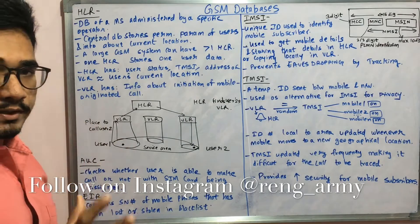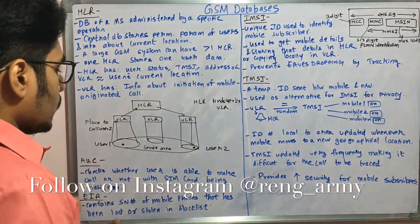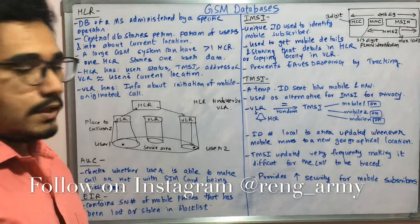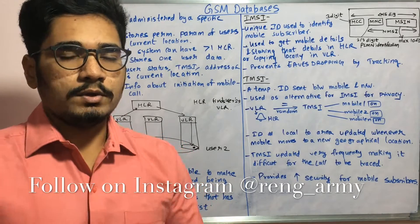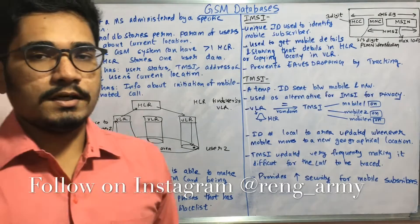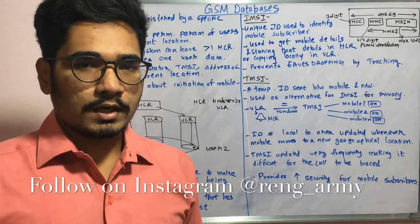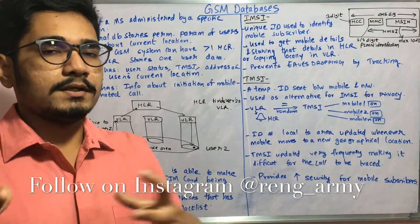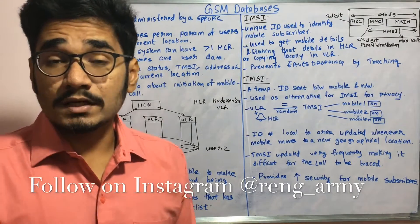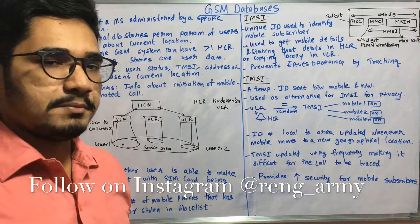Next we have the AUC, that is the Authentication Center. It is a database which checks whether the user is able to make a call or not with a brand new SIM card being assigned. When you insert a new SIM card into your device, the mobile operator will urge you to make a call to a particular number or send an SMS. This is basically a security check — whether the device is trusted, whether the call is coming from a trusted party. It checks the authentication of the communication being done.